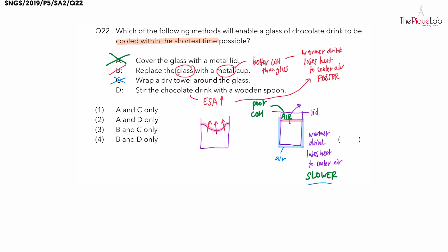Stirring also allows the hot liquid from the bottom of the cup to rise up to the surface quickly, helping the hot drink lose heat faster. So stirring the drink definitely helps to cool it faster. Hence, our answer is option four — only methods B and D work to cool the drink down quickly.